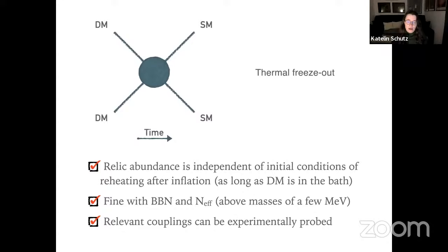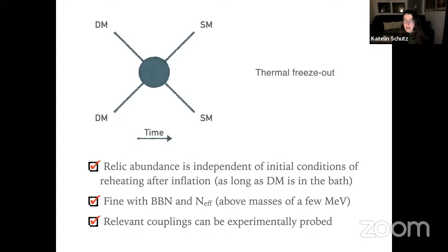The freeze-out scenario is fine with early universe observables, which is another nice feature. Also, the relevant couplings can be experimentally probed — it's always nice when there's a tight correspondence between what's happening in the very early universe and something you can probe today.